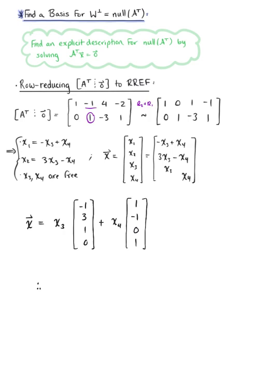So we can make our final conclusion and say that the null space of A transpose, which we know is equal to the orthogonal complement of subspace W, is the set spanned by the two vectors.